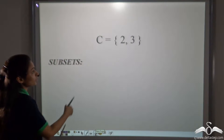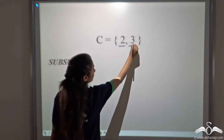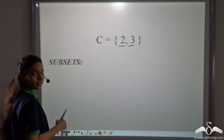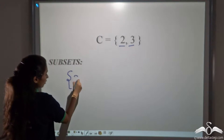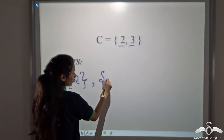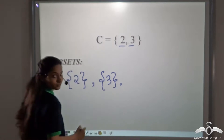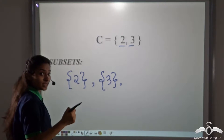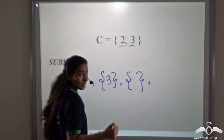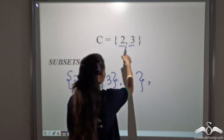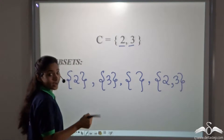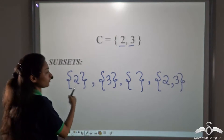Now let's take this example where there are two elements in the set C. So what will be the subsets of C? Let's write it in the roster form. Two can be a subset on its own. Only three can be a subset on its own. The empty set is a subset of every set, so empty set will be here. And the set itself is its subset. We have written all of them.